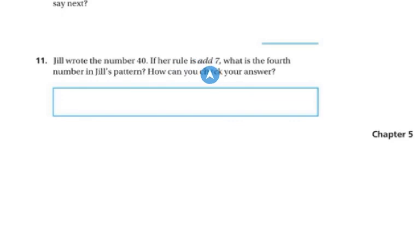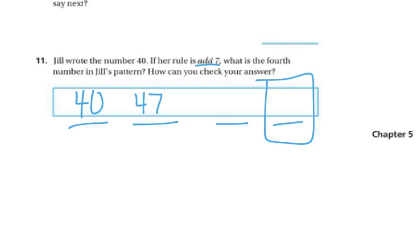Jill wrote the number 40. If her rule is to add 7, what is the fourth number in Jill's pattern? How can you check your answer? Well, I'm going to start with the 40, and I want to know the fourth number. So 1, 2, 3, 4. So this is going to be my answer. It says to add 7. So 40 plus 7 is 47. 47 plus 7 is 54. And 54 plus 7 is 61. So my answer is 61.